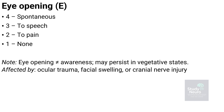The first domain of the Glasgow Coma Scale is eye-opening, which reflects the patient's level of arousal and basic brain stem function. A score of four is given when the eyes open spontaneously; three when they open in response to speech; two when they open only to a painful stimulus; and one when there is no eye-opening at all. It's important to note that eye-opening does not necessarily indicate awareness — this reflex can persist even in a vegetative state. The assessment can also be affected by ocular trauma, facial swelling, or cranial nerve injury, which may prevent eye-opening despite intact neurological function.